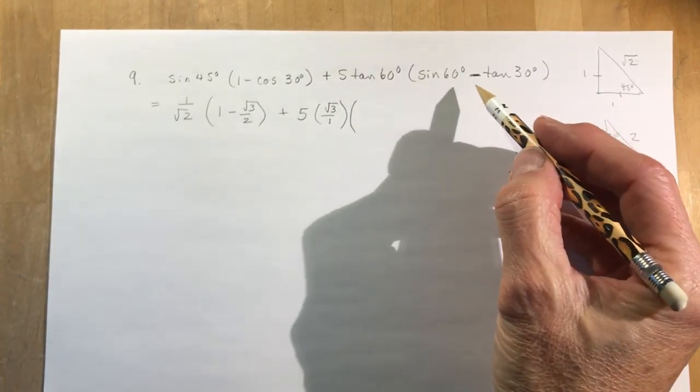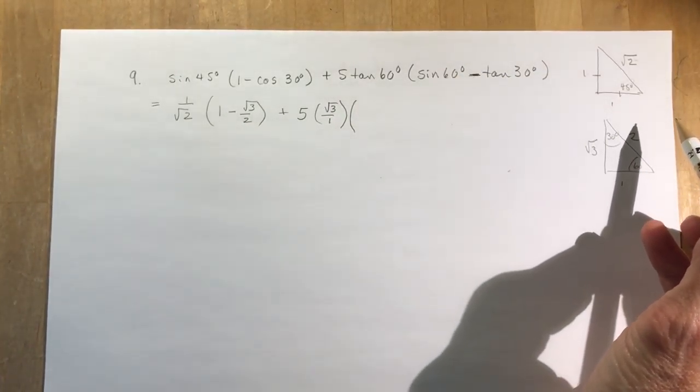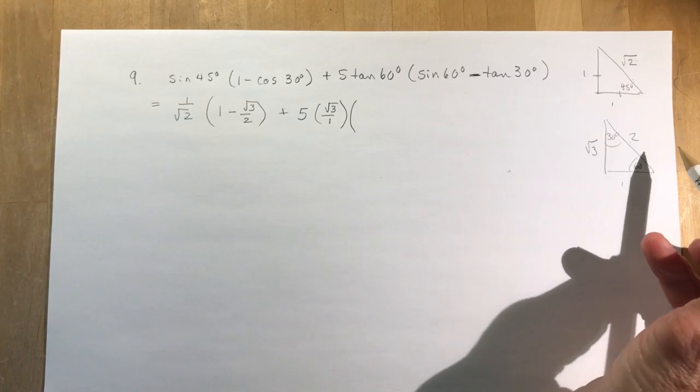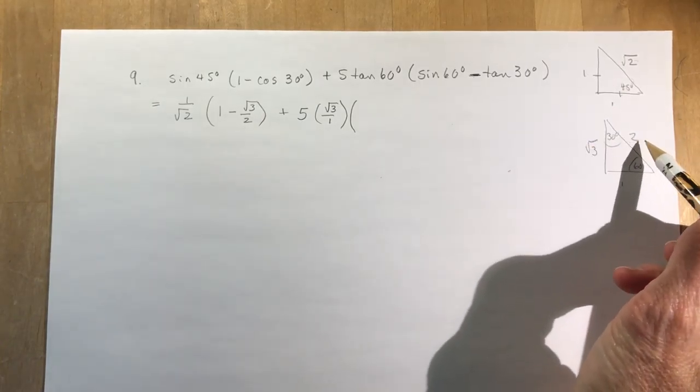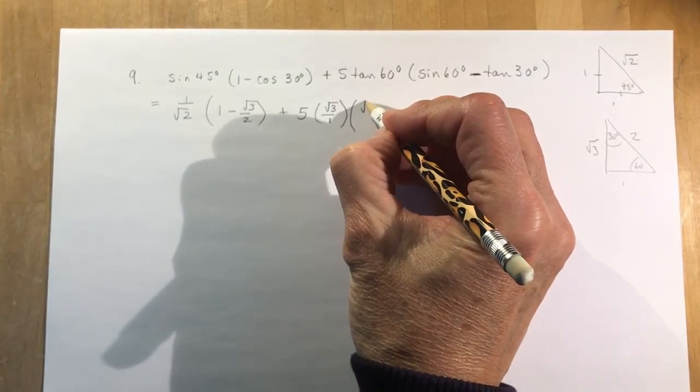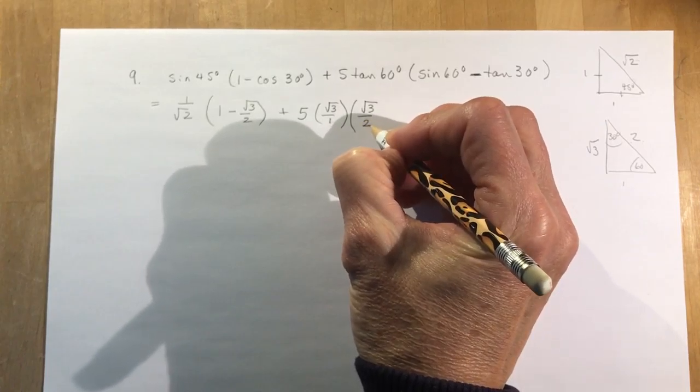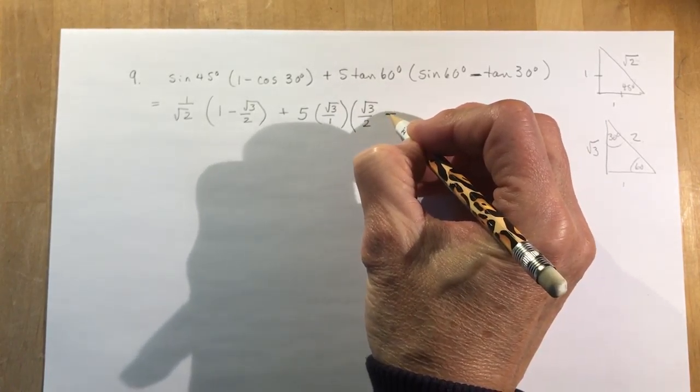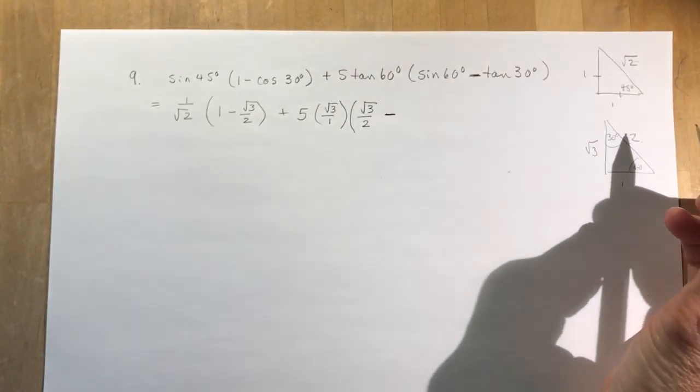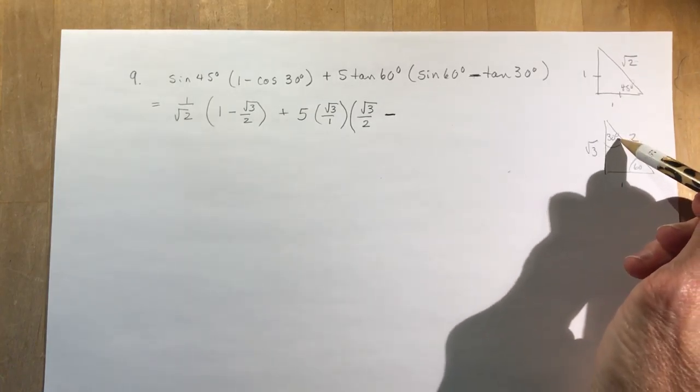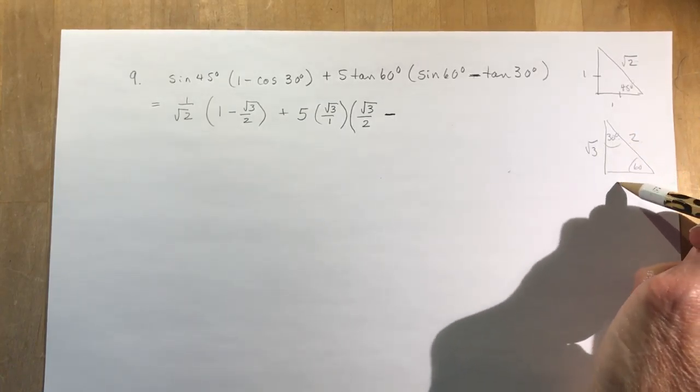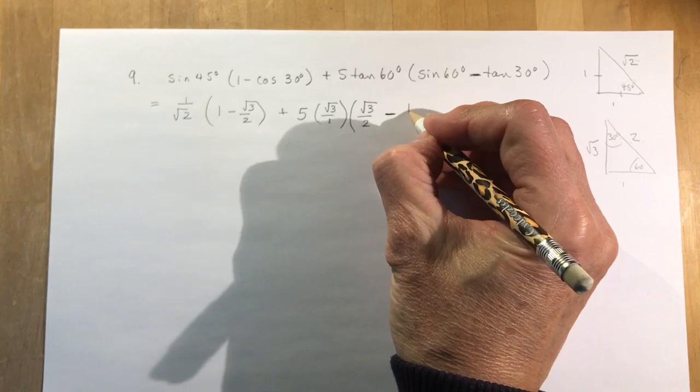And then we're multiplying by the sine of 60 degrees. Sine of 60 is here, so opposite over hypotenuse, root 3 over 2. And subtracting, yes, thank you Matthew, the tan of 30, tan of 30, we're up here, opposite over adjacent, which is 1 over root 3.